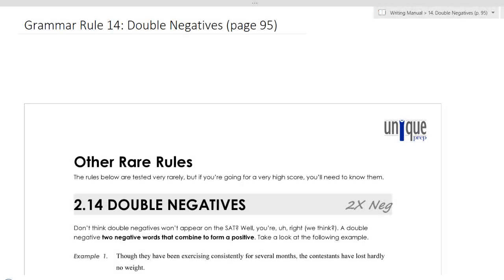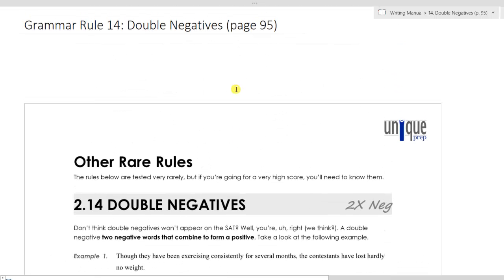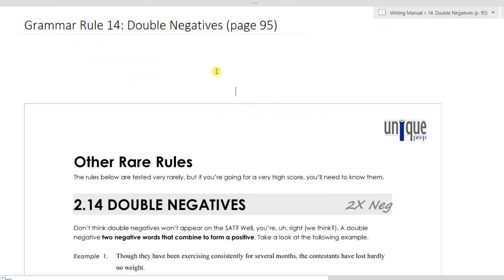Grammar rule number 14, double negatives. This is page 95 of the writing manual. Grammar rule number 14, double negatives. There are two rules on this page. They are under the heading other rare rules.